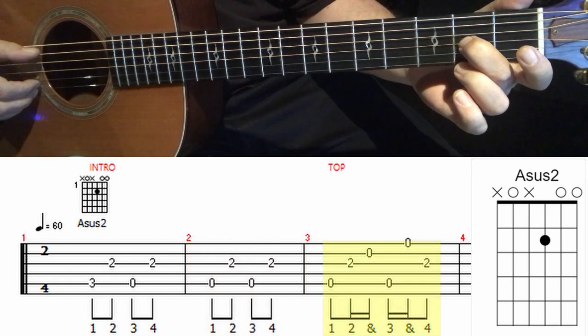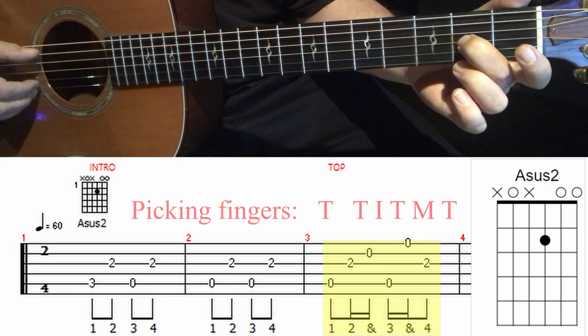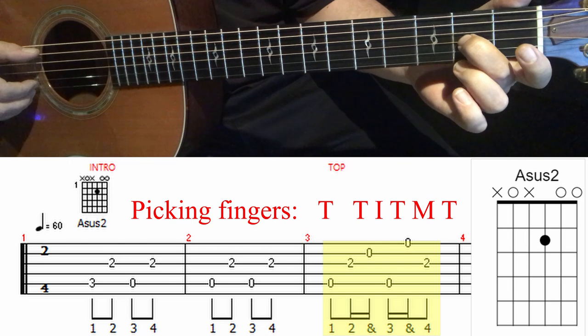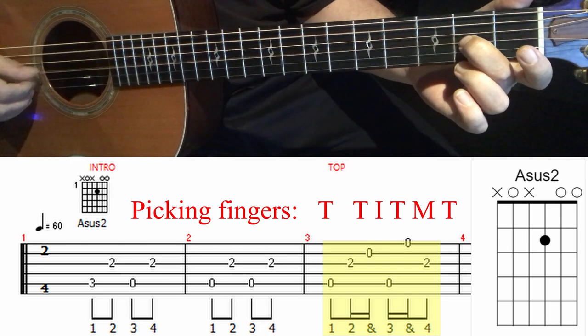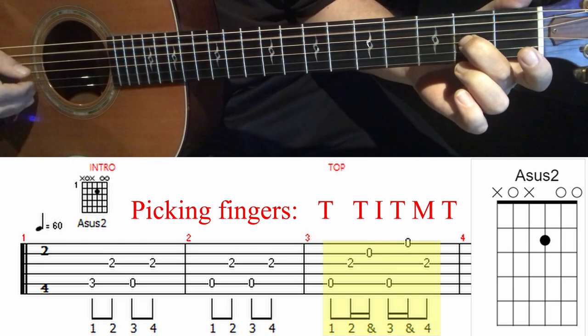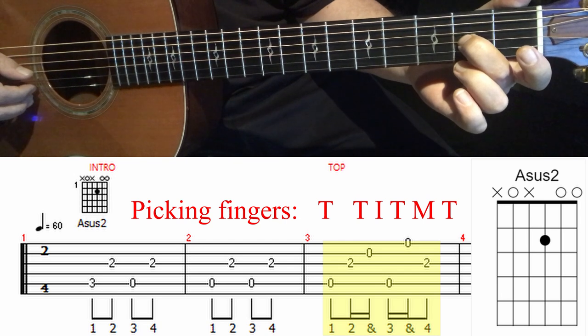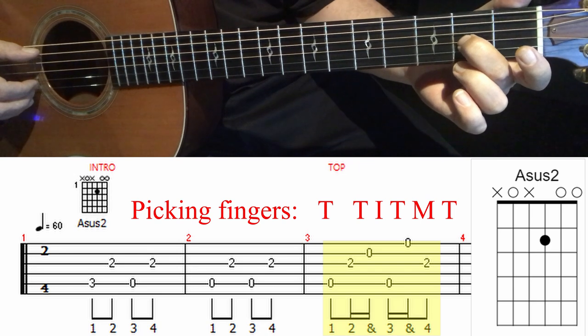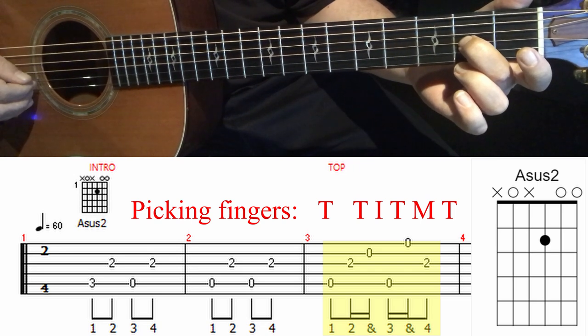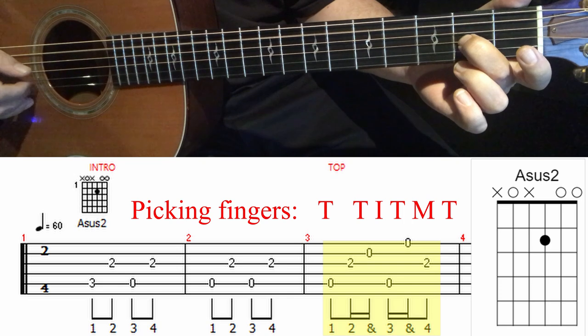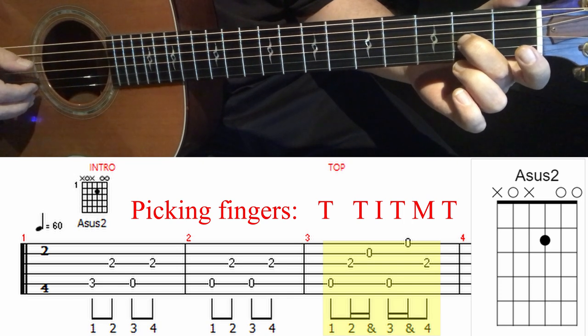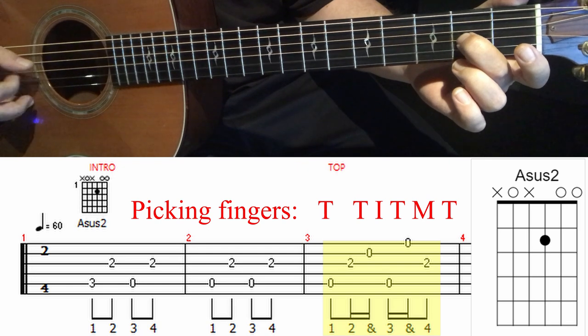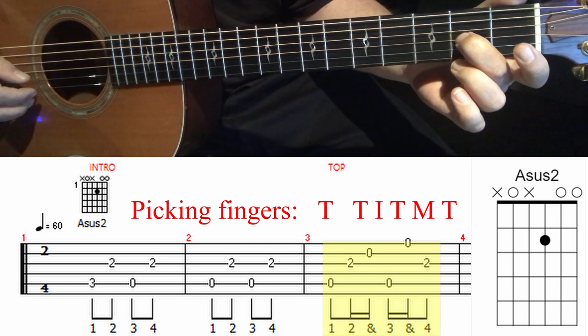Measure three is the pattern now that we're familiar with, and just the strings are changed. So I'll count out the strings for you. It's five, three, two, five, one, three. And it's counted one and two and three and four and.